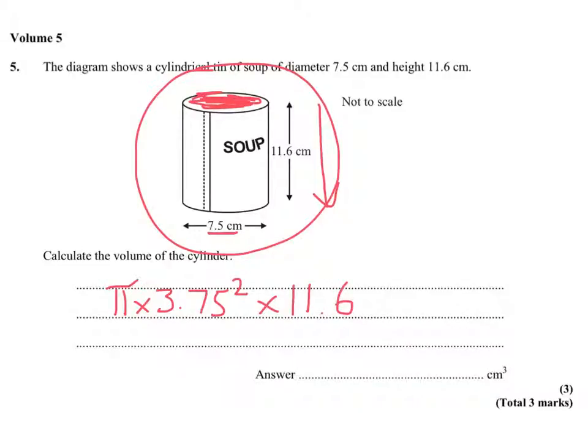Right, there you go. Now we just chuck in our calculator, don't forget to use the pi button, and you get 512.5, and they've already done the units for us, centimetres cubed.